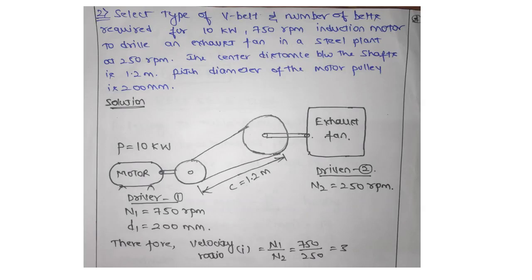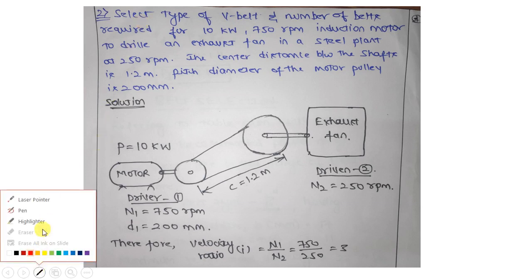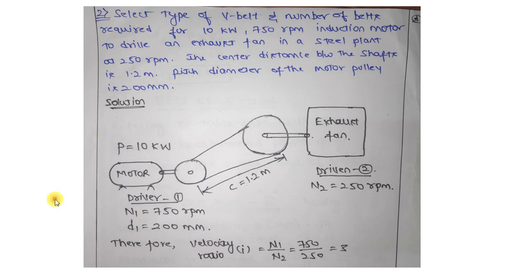Hello everyone. Today we will discuss one of the problems on V-Belts. This is the problem statement. Note the word 'select' — this is a design and selection problem where you need to assume a lot of things and follow the design procedure. So this falls under the design category of a problem.